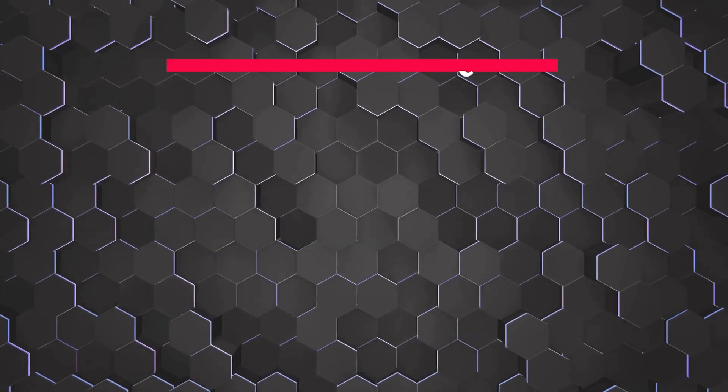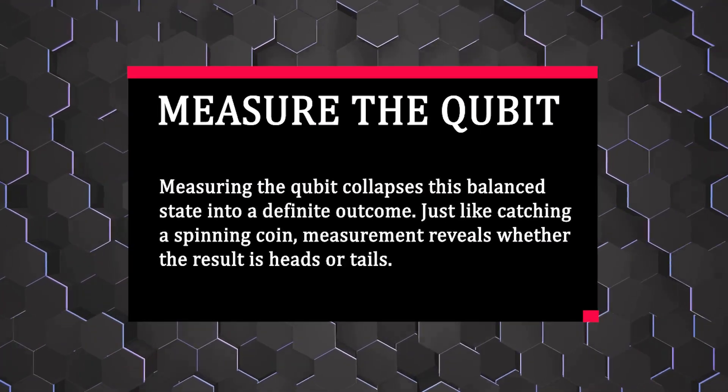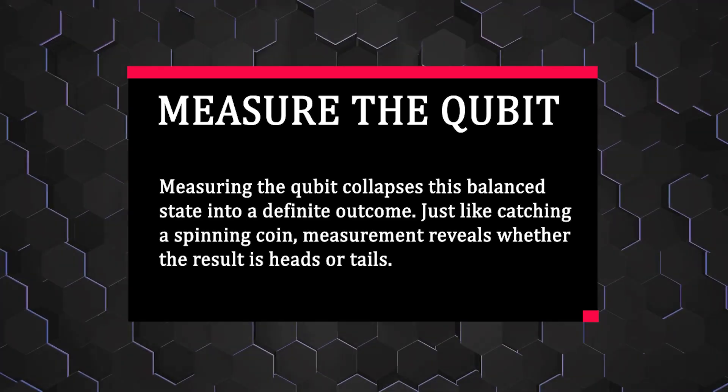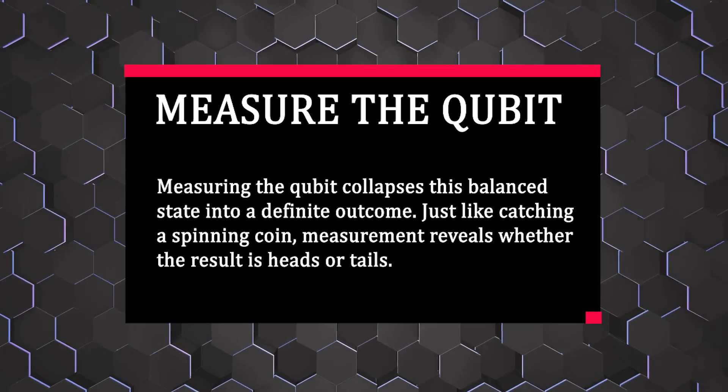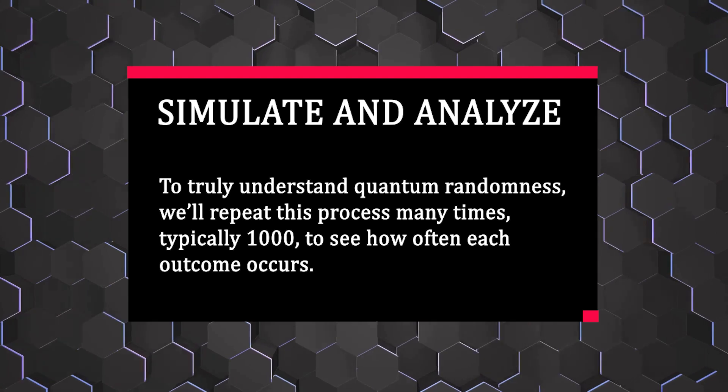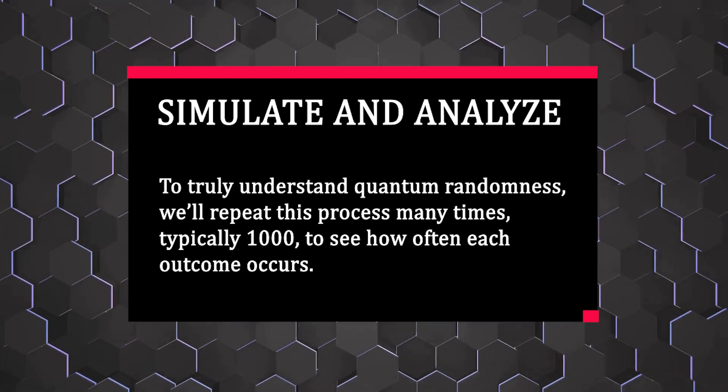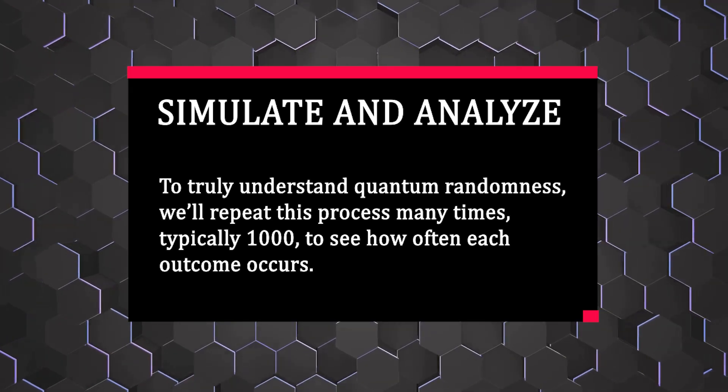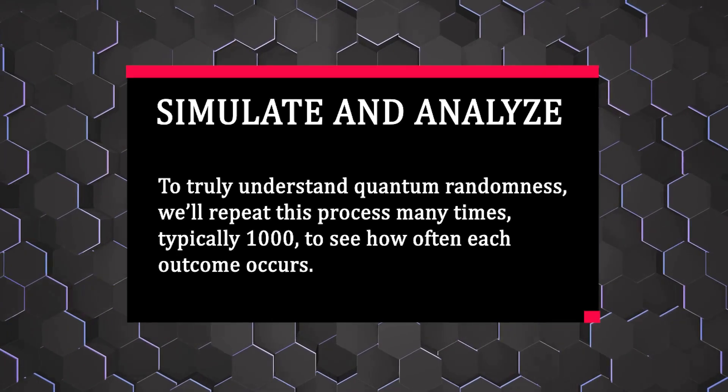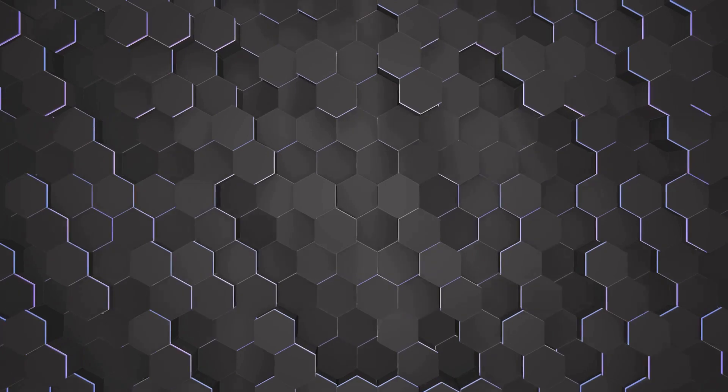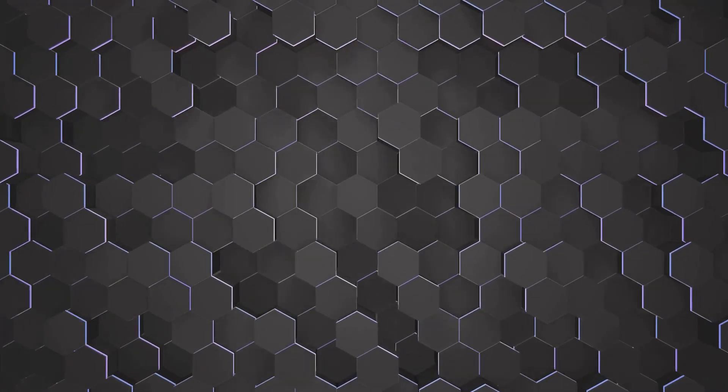Step 3: Measure the qubit. Measuring the qubit collapses this balanced state into a definite outcome, just like catching a spinning coin. Measurement reveals whether the result is heads or tails. Step 4: Simulate and analyze. To truly understand quantum randomness, we'll repeat this process many times, typically 1,000, to see how often each outcome occurs. By counting these results, we calculate clear probabilities for heads and tails. This logical flow—initialize, apply quantum gates, measure, and analyze—is essential for any quantum algorithm. Mastering this logic is key to becoming proficient in quantum programming with Qiskit. Now that we've built our logical foundation, let's start coding our quantum coin flip in the next chapter.